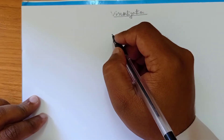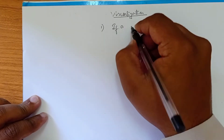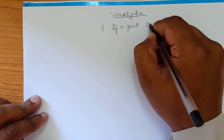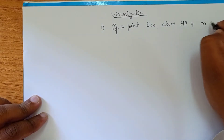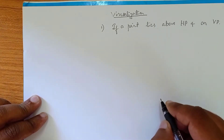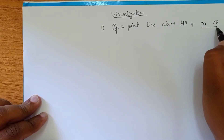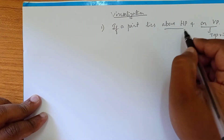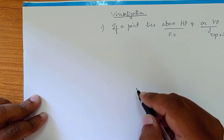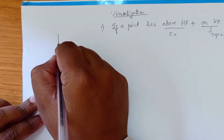If a point lies above HP and on VP — we will be hearing the term 'on VP' for the first time. We know that 'on HP' means it is the top view, and we need to find out what the front view means in this context.